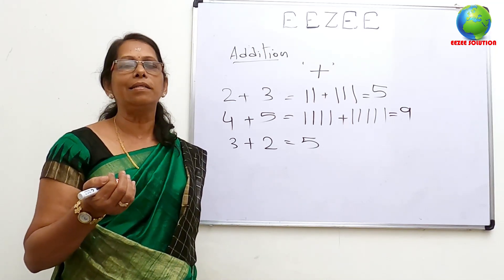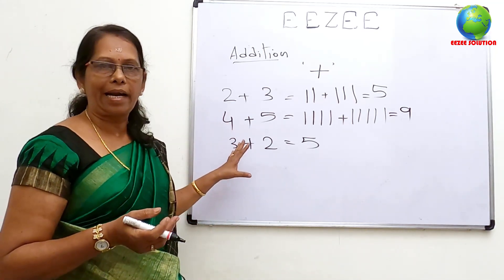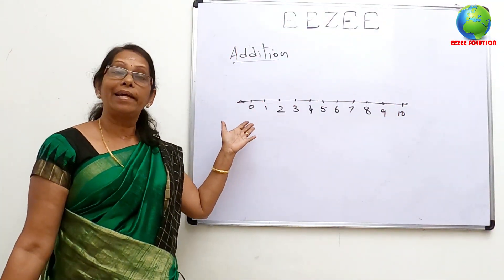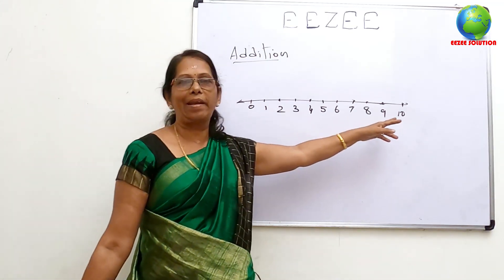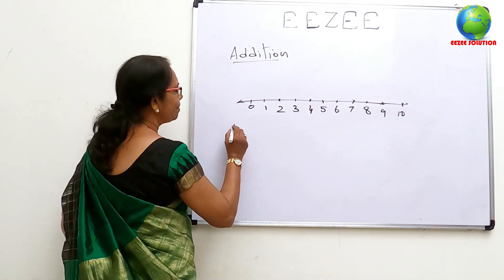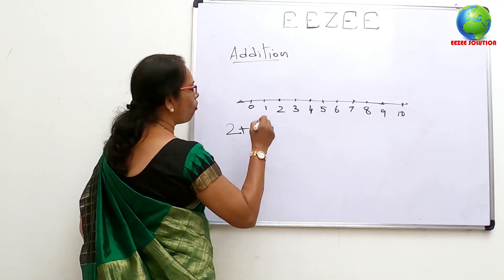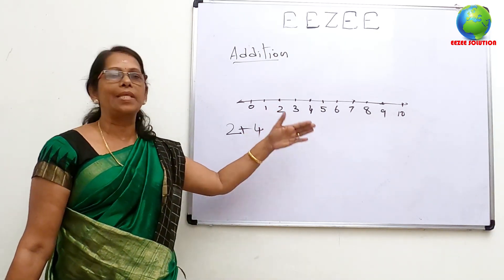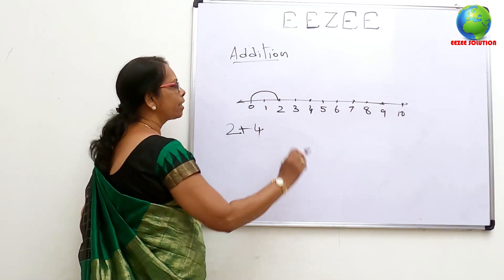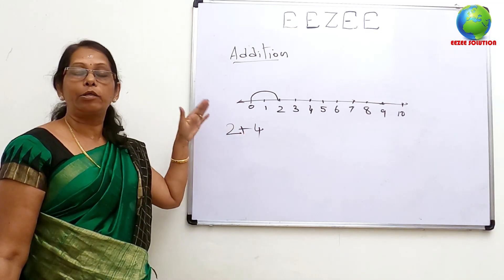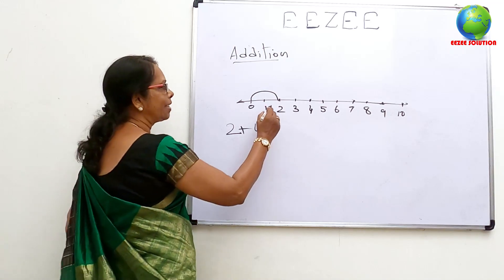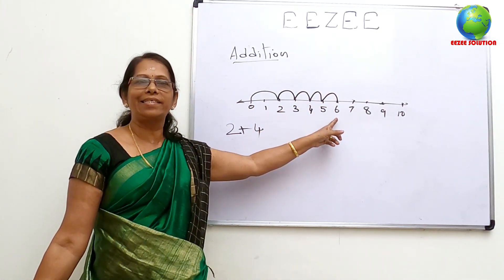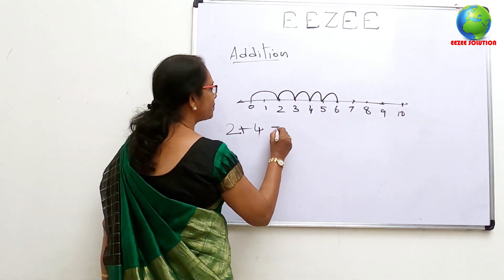We have to count on the number line. We have to count on the number line, 4. This number line is the same way. This number is 2. This number is 4. 1, 2, 3, 4.